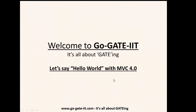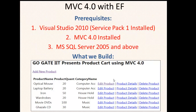Welcome to GoGetIt. Today we will see some basics of building an ASP.NET MVC4 web application. To start with, there are certain prerequisites that need to be installed in your system, as we will be developing a web application using Visual Studio in C-sharp. The prerequisites are Visual Studio 2010 with Service Pack 1 installed, MVC4, and MS SQL Server 2005 or above for database management.